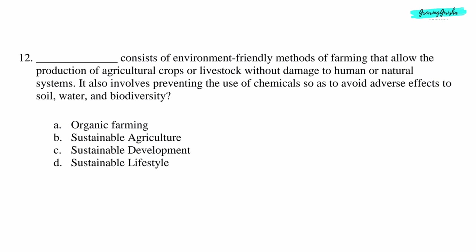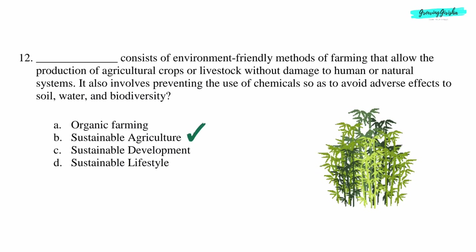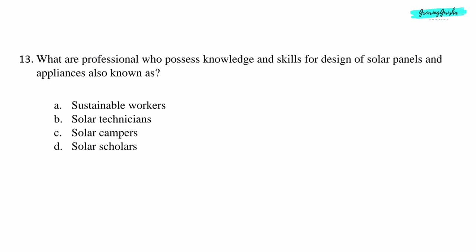Question 12: This consists of environment-friendly methods of farming that allow the production of agricultural crops or livestock without damage to human or natural systems. It also involves preventing the use of chemicals so as to avoid adverse effects to soil, water, and biodiversity. Option B: Sustainable Agriculture.